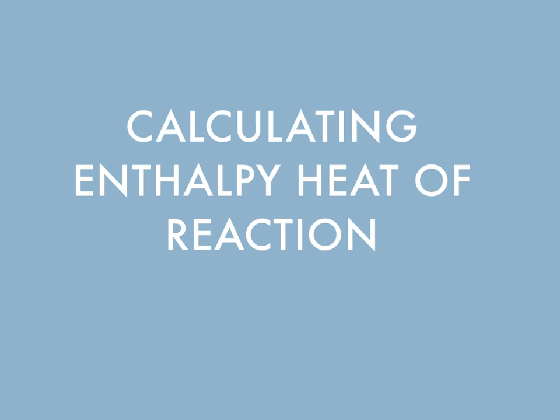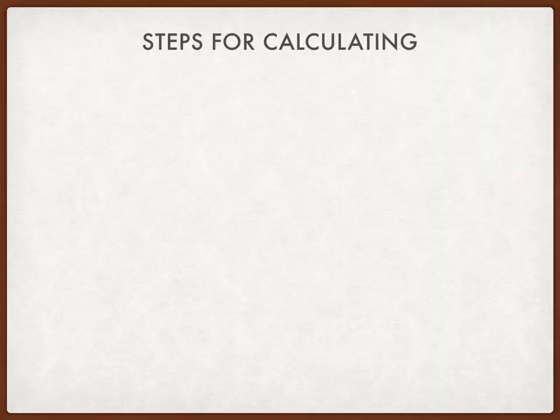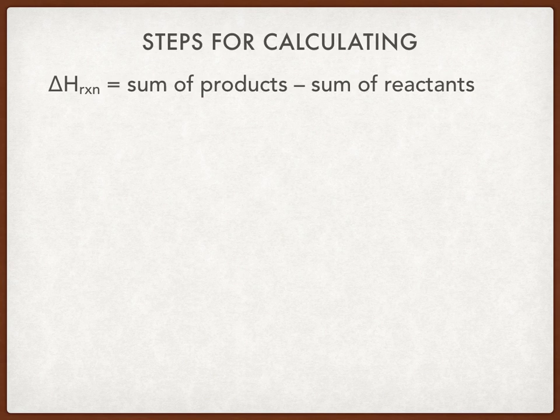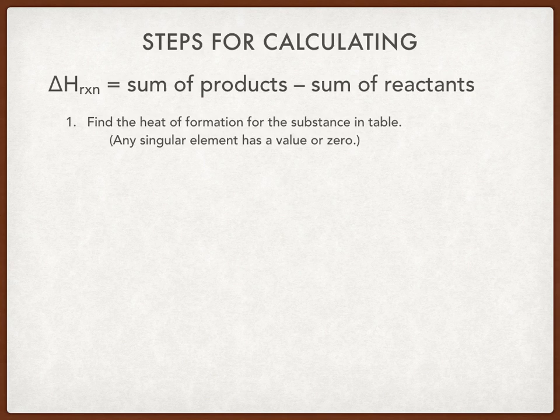This presentation will cover calculating the heat of reactions, or enthalpy. The formula we're going to use is the delta H of reaction — the triangle symbol stands for delta. Delta H of reaction is equal to the sum of the products minus the sum of the reactants.